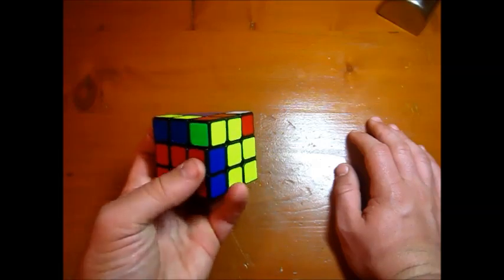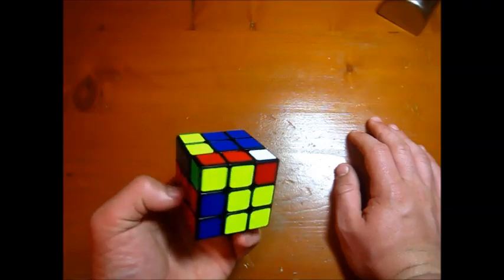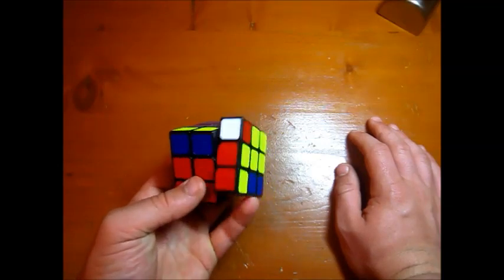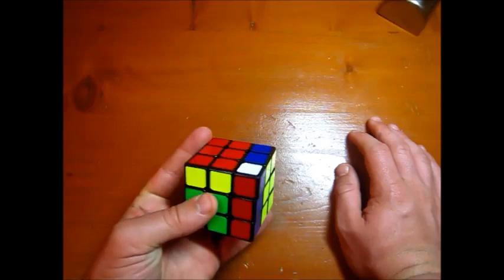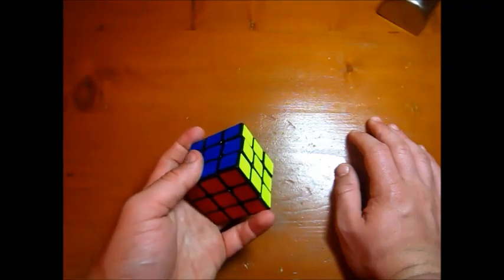Because basically what the sledgehammer does is it pulls this edge in with an F and pulls it out with an R. And so basically when you pull an edge in with an F and push it out with an R, that's going to change its orientation. So if we look at the other edge, this edge,